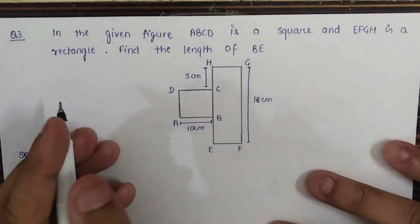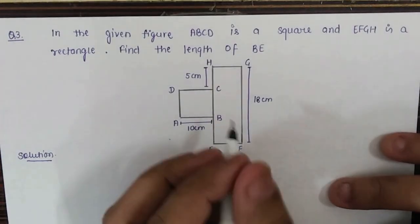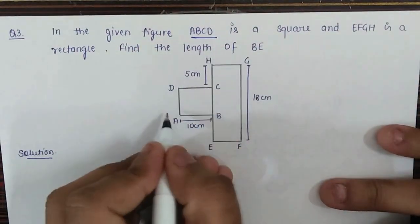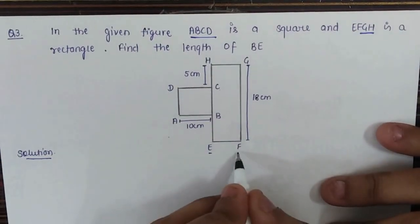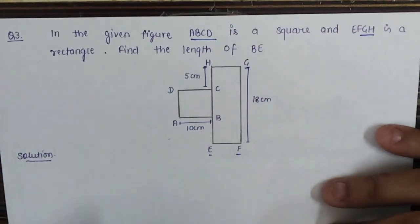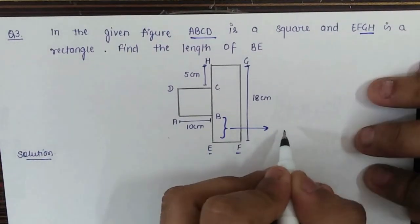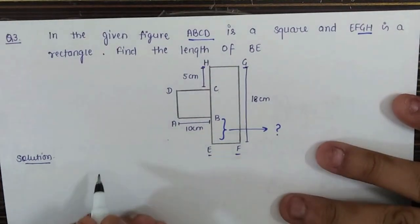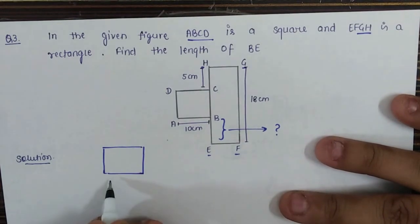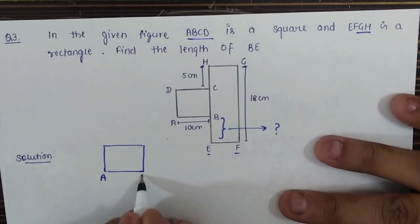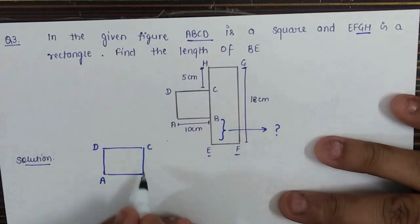Let's discuss question number three. There is a figure given. ABCD is a square and EFGH is a rectangle. We have to find the length of BE. If you talk about a square, you should know one property: all sides of a square are equal — AB, BC, CD, and AD are all equal.